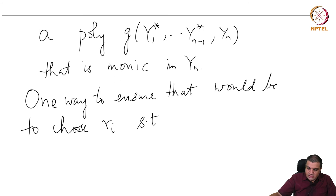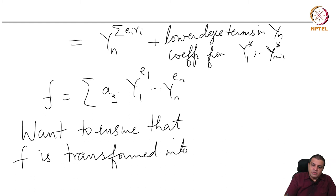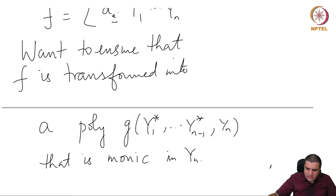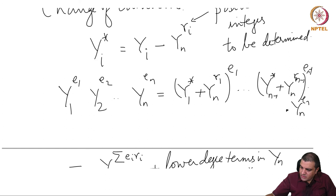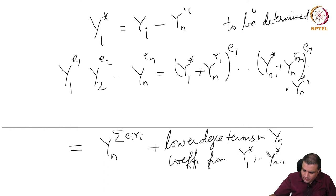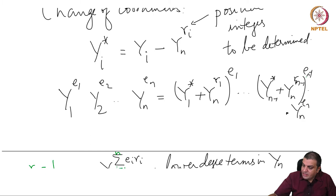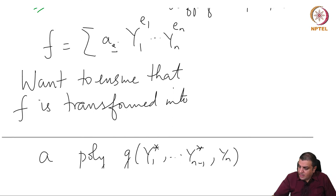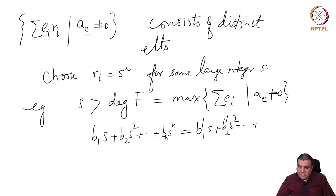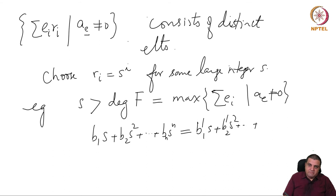Hence, in this sum, when we expand out, precisely one of those terms will dominate. Note that r_n is 1 by definition — that is how the sum will come: en + r(n-1)·e(n-1), and so on. Choosing ri = s^i for very large s ensures all the degrees are distinct, and exactly one term will dominate, ensuring that f transforms to a monic polynomial.